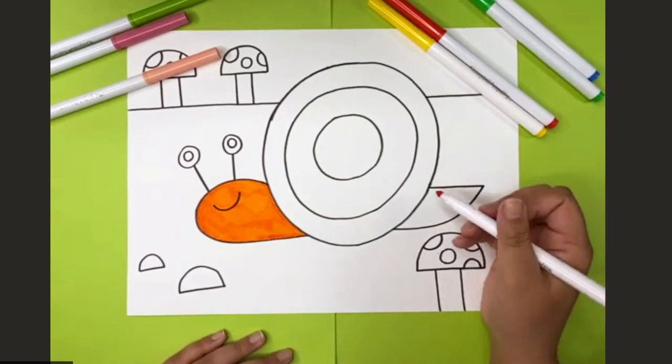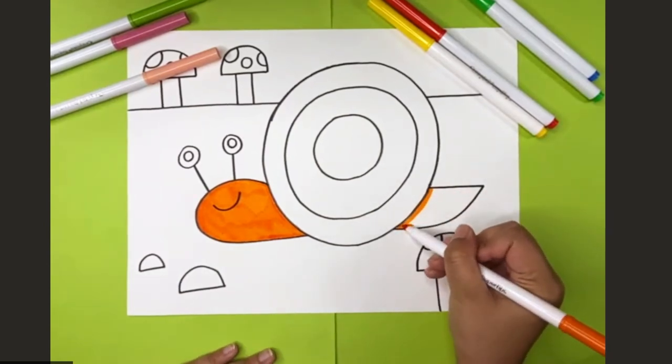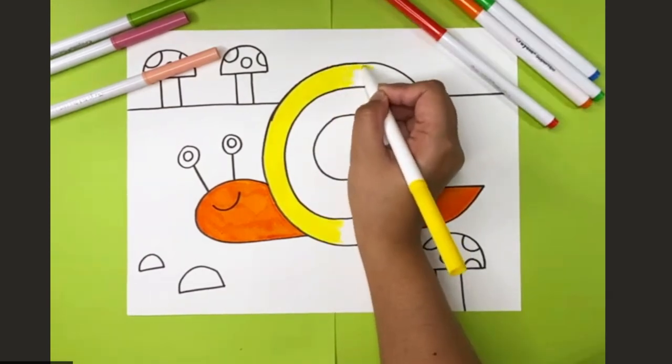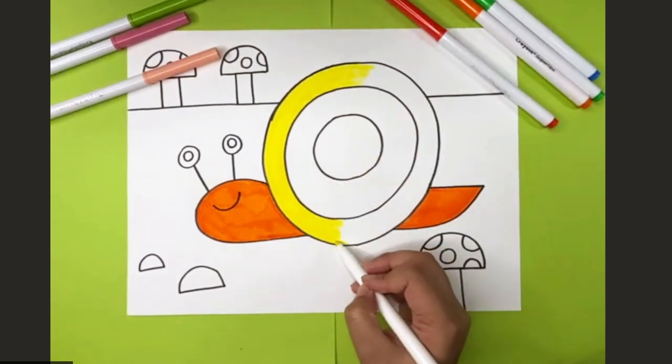So we're coloring the head and the tail. All right, I'm actually going to start coloring my shell. So you can choose different colors, put different patterns on.